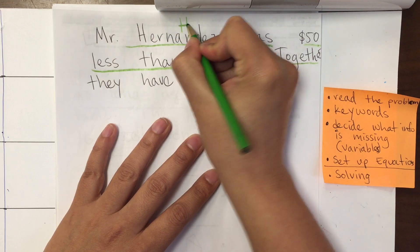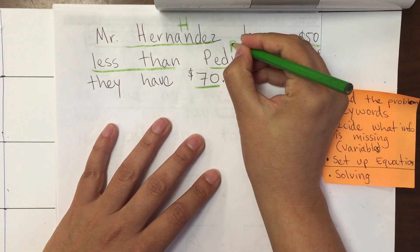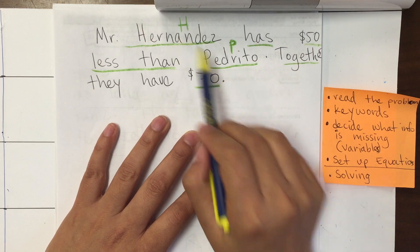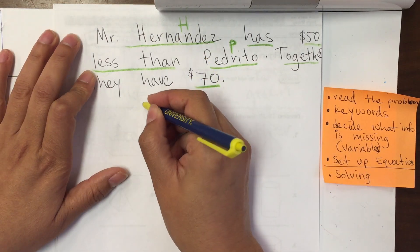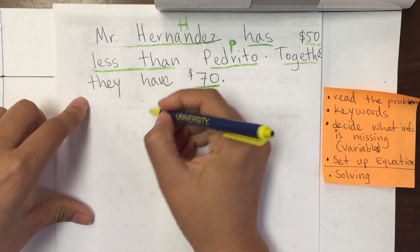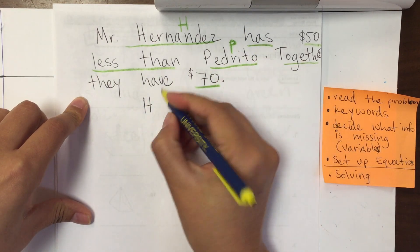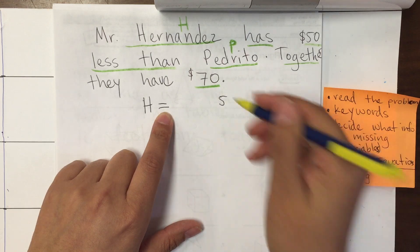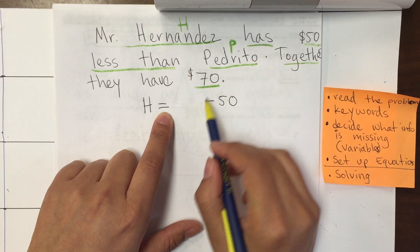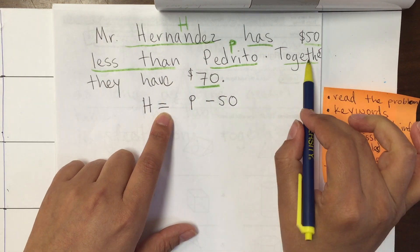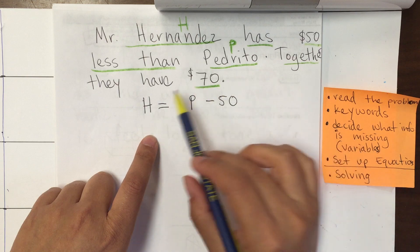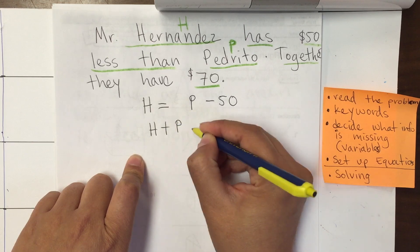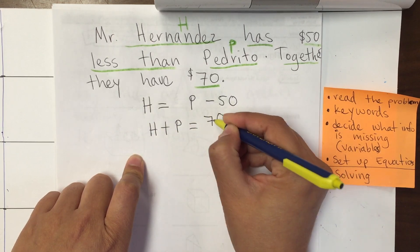We'll represent Mr. Hernandez with H and Pedrito with P — representing the money each one has. So: Mr. Hernandez has 50 less than Pedrito — starting from the right: H = P − 50. Then together: Mr. Hernandez and Pedrito together have a total of 70 dollars: H + P = 70.